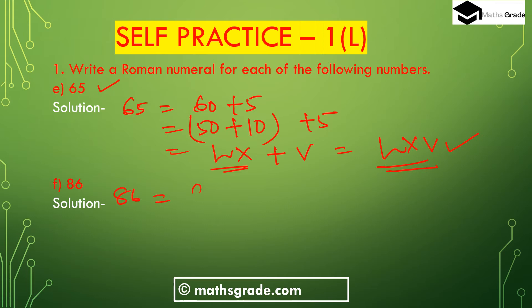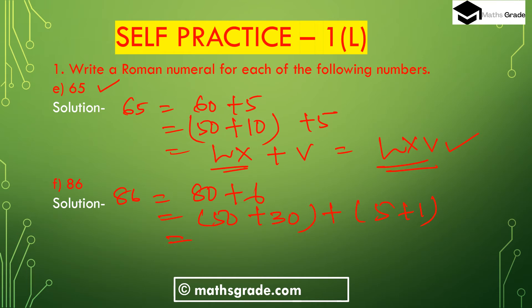Part (f): 86. We write 86 as 80 plus 6. Here 80 is 50 plus 30, and 6 is 5 plus 1. Since addition is used throughout, we write 50 as L, 30 as XXX, then 6 as VI. So 86 in Roman numerals is LXXXVI.